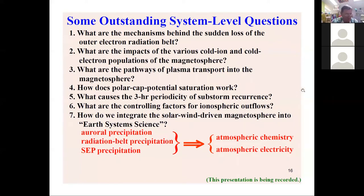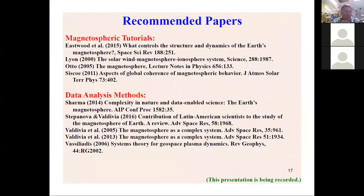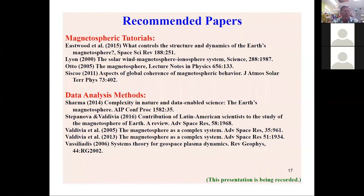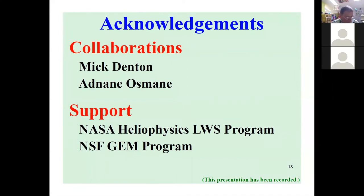The recommended papers at the top are magnetospheric tutorials that I really like — some are short, some much longer. Most papers on system science and the magnetosphere discuss applications of mathematical techniques to search for chaos or system dimensionality rather than actual system properties. There are also papers listed for data analysis methods based on getting particular properties from data sets, usually the AE index. Thank you for listening to this talk. I hope you all stay well.